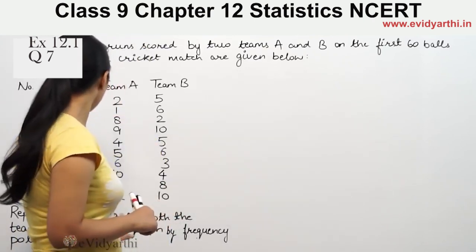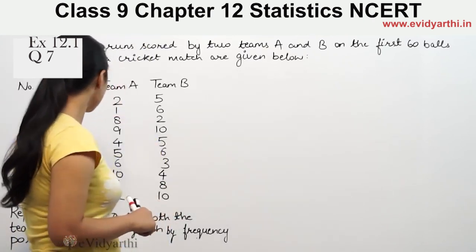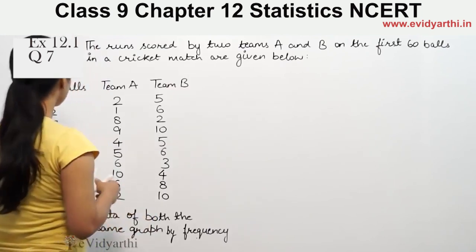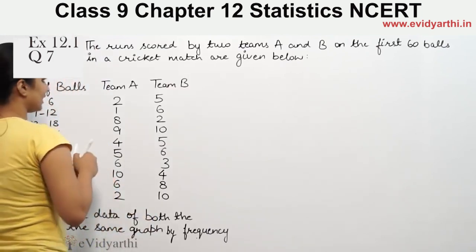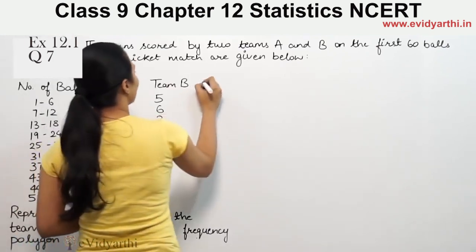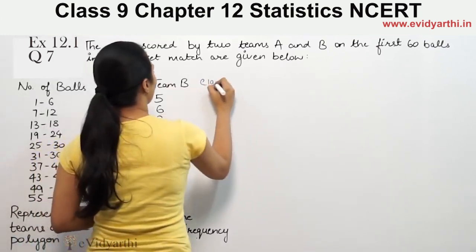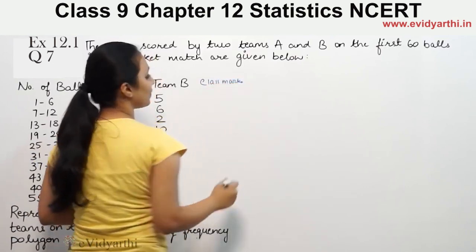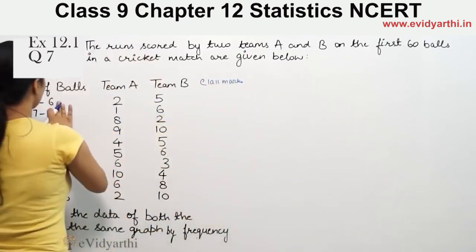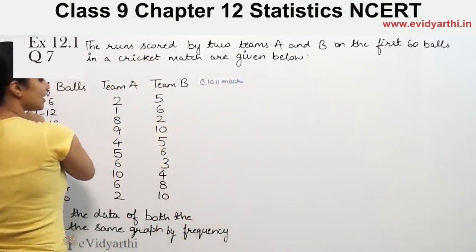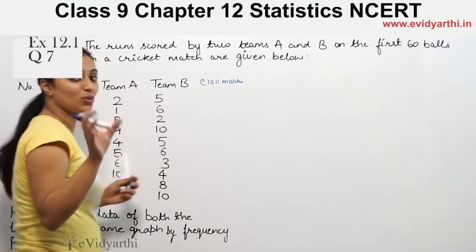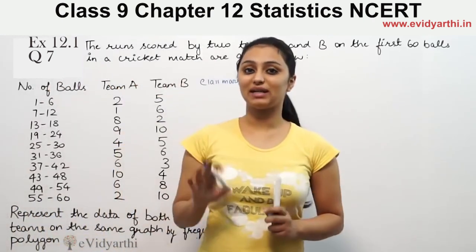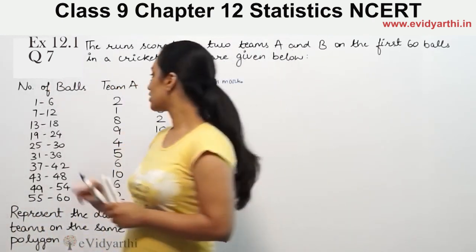For the frequency polygon, we need class marks. Class marks are calculated as upper limit plus lower limit divided by 2.